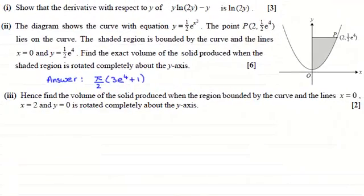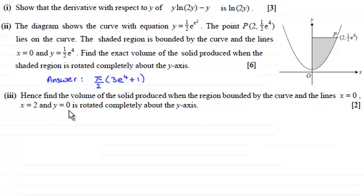In this last part of the question we're asked to find the volume of the solid produced when the region bounded by the curve and the lines x equals 0, x equals 2, and y equals 0 is rotated completely about the y axis.